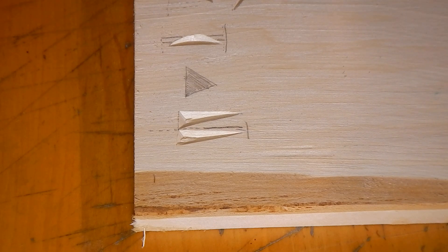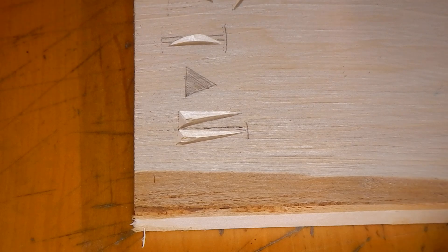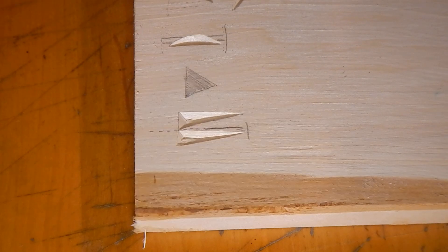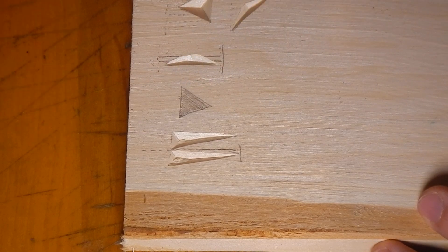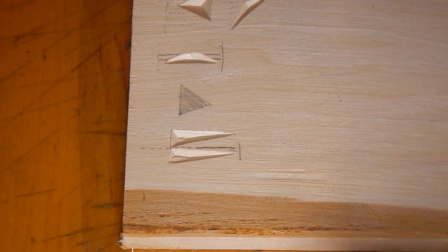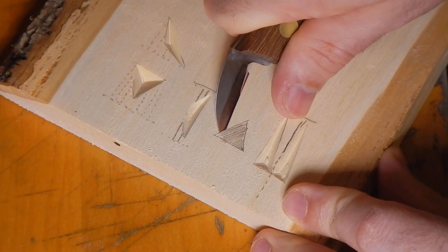And again, the more, the closer to along the grain it is, the more that's going to be a problem. For something like this, where it's very off axis, it's like a 45 degree angle, that's probably not going to cause any problems to carve in that direction.